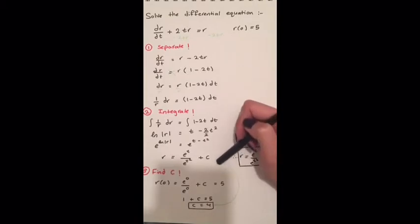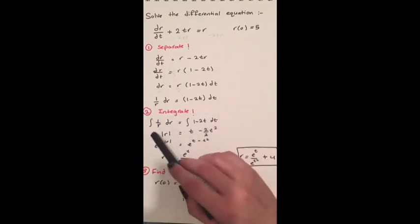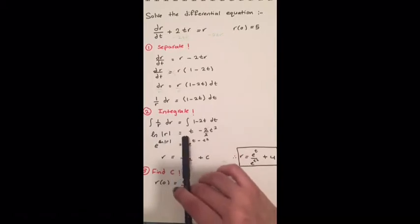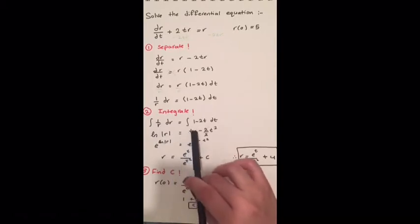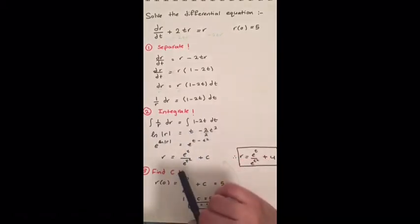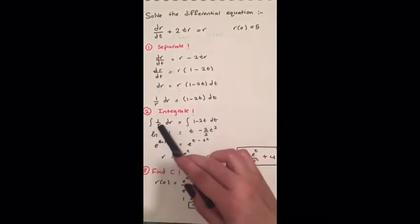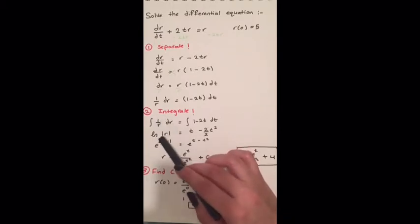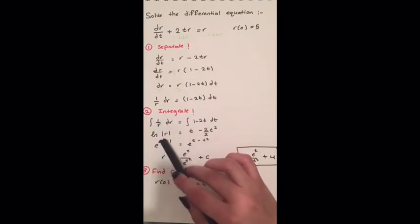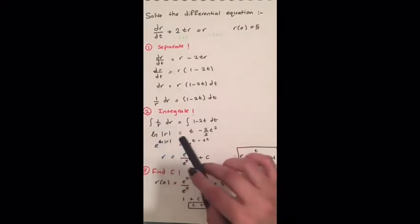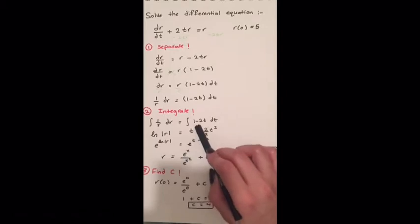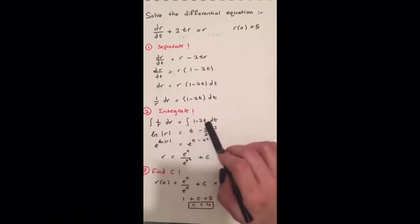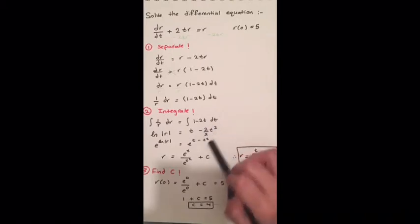The next step is to integrate. We will have the integral of 1/r dr equals the integral of (1 minus 2t) dt. The integral of 1/r is the natural log of the absolute value of r, and on the right side, the integral of 1 is t and the integral of 2t is t squared.